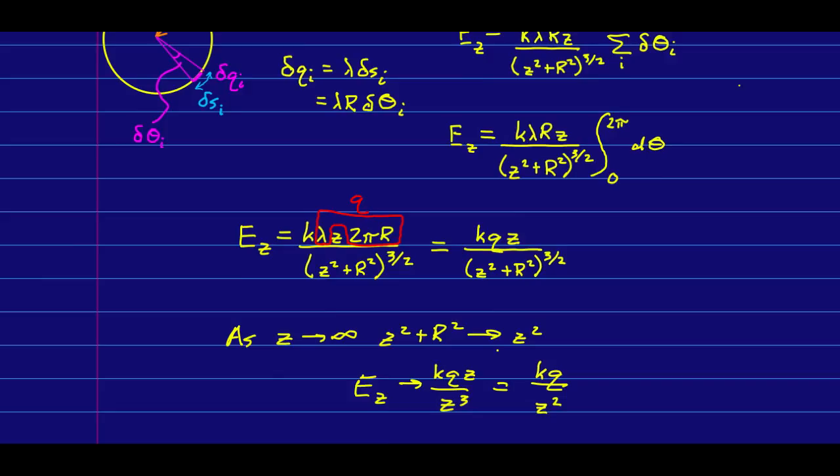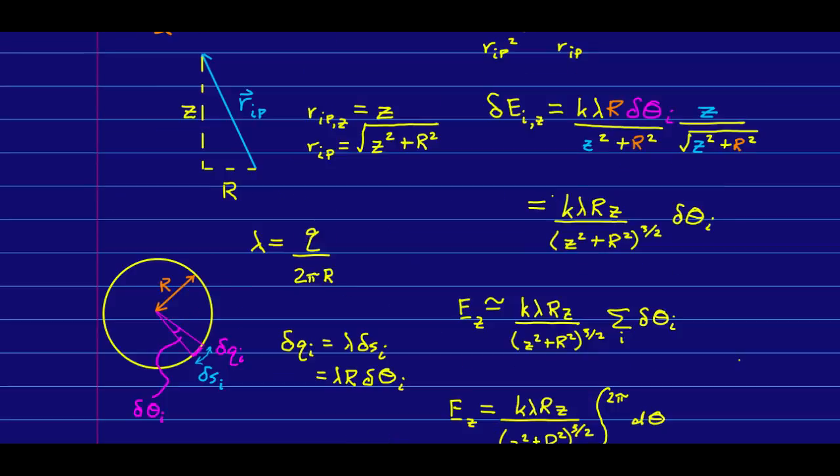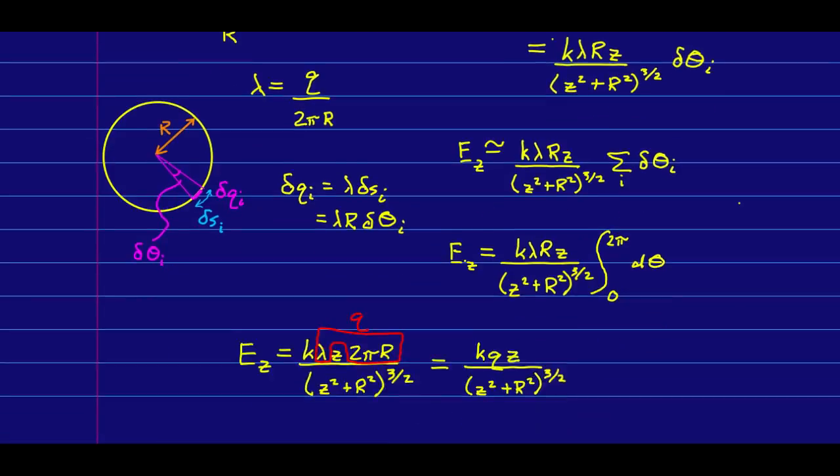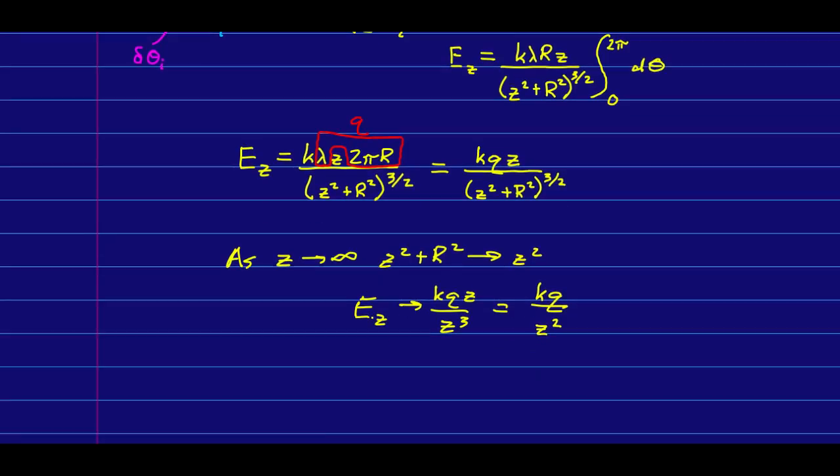In fact, for any distribution, this is true that as you go to very large distances the distances have to be large compared to the size of the object it ends up looking just like the E field due to a charged particle again. And you can check that this is true for the expression I got for the thin rod.